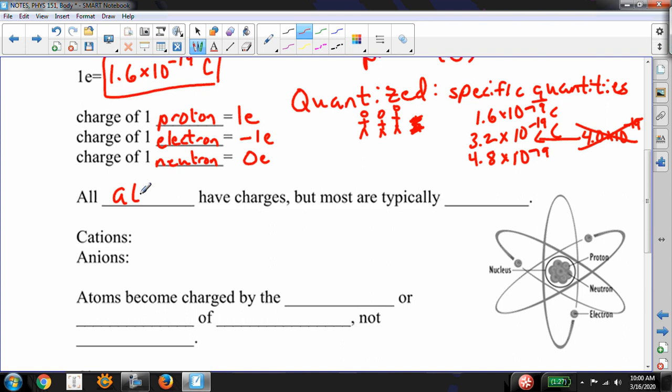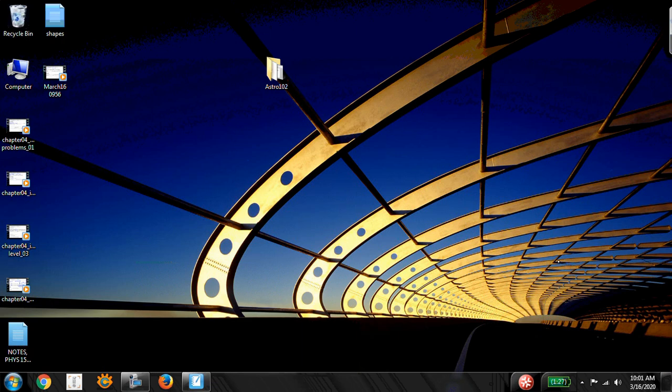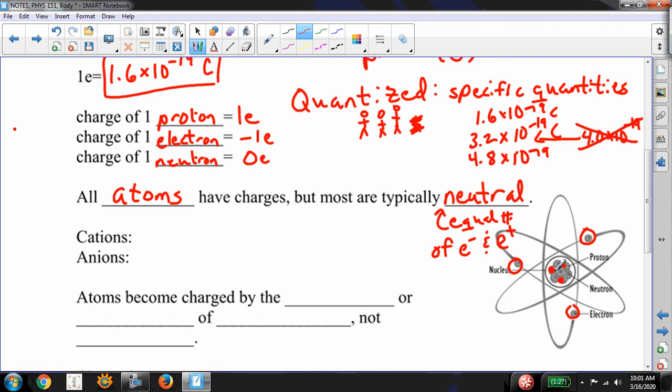All atoms have charges, but most are typically neutral. That means that they have an equal number of electrons and protons. And so for example, here I have one, two, three electrons. And then down in here, I have one, two, three protons. And then in this one, I have some neutrons. So in a neutral atom, I have equal numbers of electrons and protons.